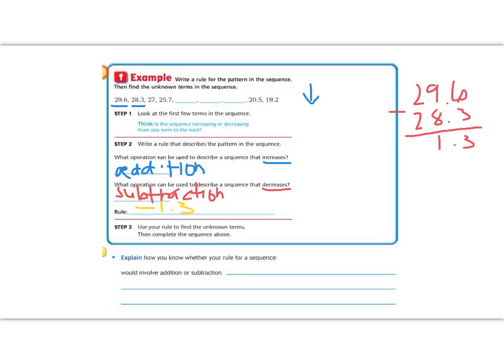So the last term that we knew was 25.7, and we're going to subtract 1.3. 7 minus 3 is 4, bring down the decimal, 5 minus 1 is 4, and then bring down the 2. So our next number is 24.4. Let's continue on with our rule of minus 1.3 to find our next term. 4 minus 3 is 1, 4 minus 1 is 3, and bring down the 2. And don't forget the decimal. So now we have 23.1.